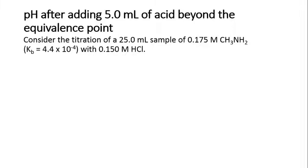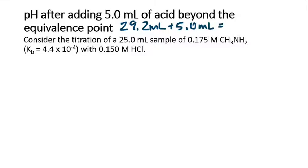Now we're calculating the pH after adding 5 milliliters of acid beyond the equivalence point. We have to figure out how much acid we're adding. The equivalence point was 29.2 milliliters of acid. 5 milliliters beyond is another 5 milliliters, which should be 34.2 milliliters of acid.